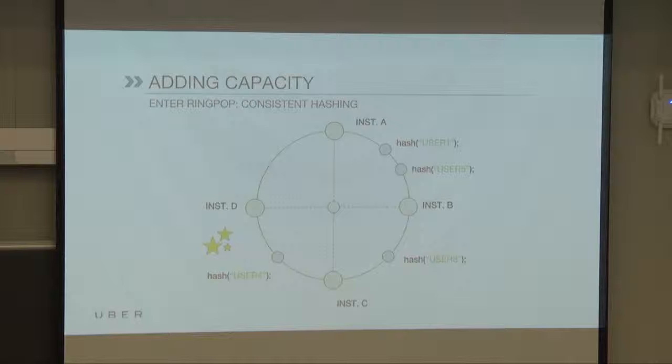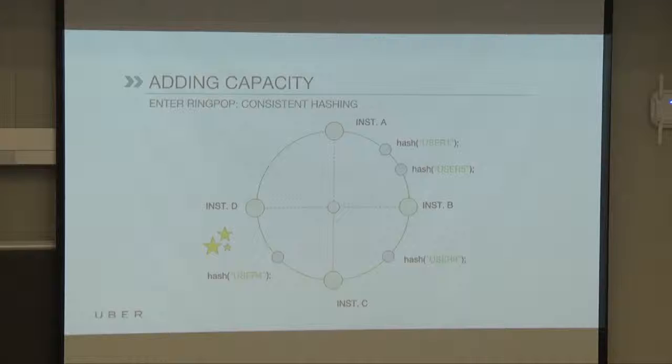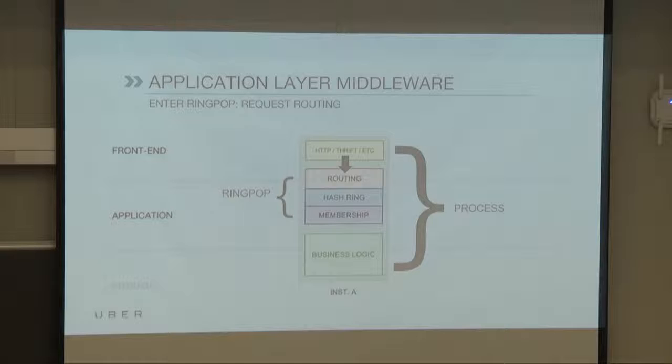Consistent hashing is just as capable when adding capacity. When a new instance D is added, anything like user4 that previously hashed to A and now exists between C and D belongs to D. So we get a minimal amount of rebalancing or shift in the key space.